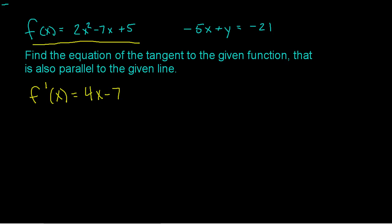Here's the idea: I know a formula to help me find the slope, but I also want to be parallel to this line. If I'm parallel to that line, then I have the same slope. To find the slope of the line, I need to put it into slope-intercept form where y is by itself. I'm going to add the 5x over, so I get y equals 5x minus 21. That easily lets me see that the slope is 5.